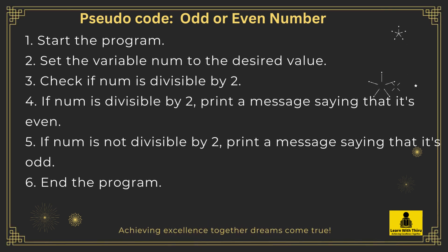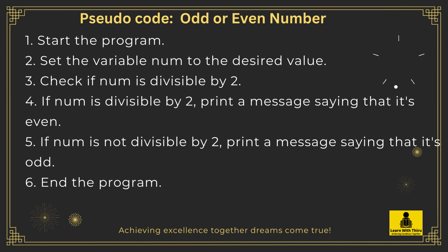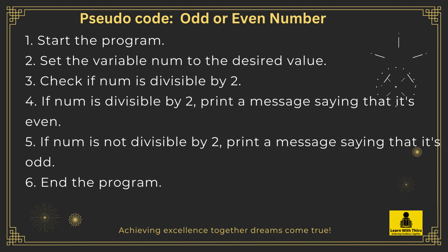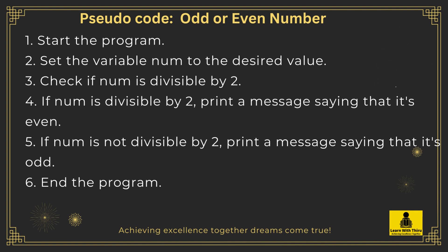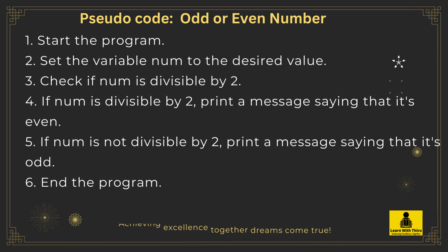Pseudocode: odd or even number. One: start the program. Two: set the variable num to the desired value. Three: check if num is divisible by two. Four: if num is divisible by two, print a message saying that it's even. Five: if num is not divisible by two, print a message saying that it's odd. Six: end the program.